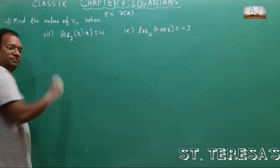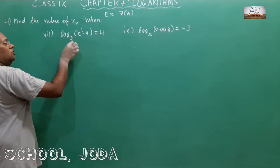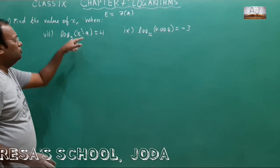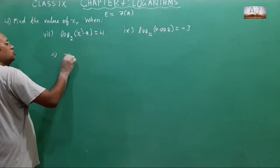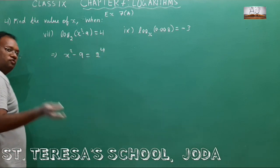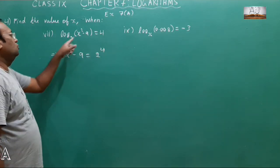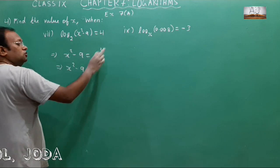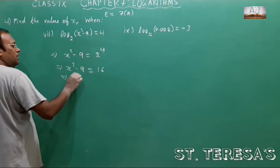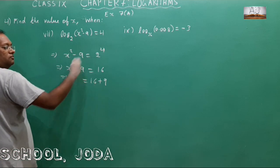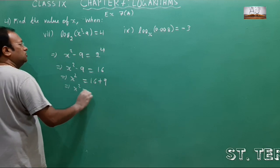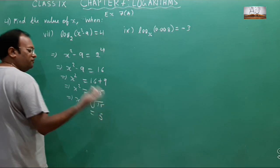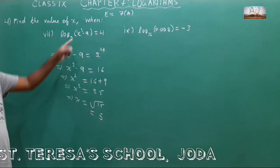Now let us see question number 7. Log of (x squared minus 9) with base square root of 3 is equal to 4. Convert to exponential form: square root of 3 to the power 4 equals x squared minus 9. This gives 9 equals x squared minus 9, so x squared equals 25, and x equals square root of 25 which is 5. This is the solution for the value of x.